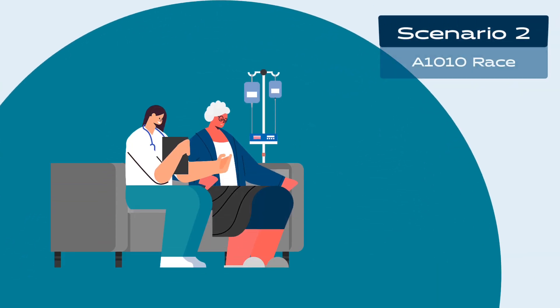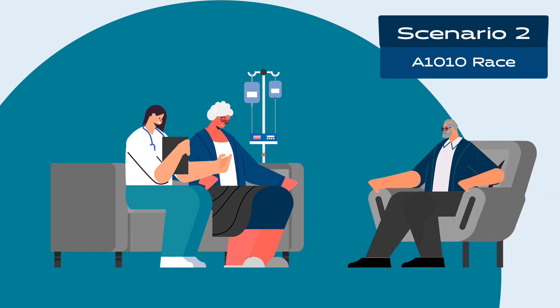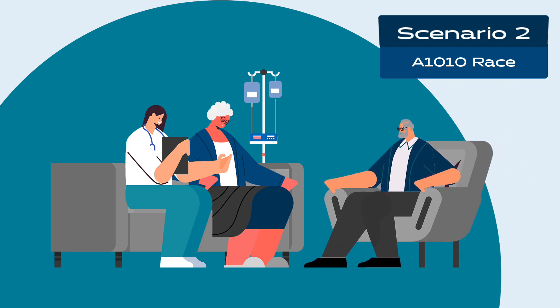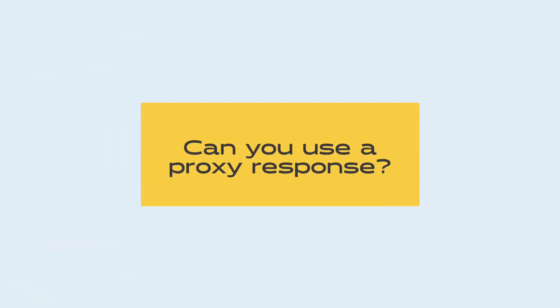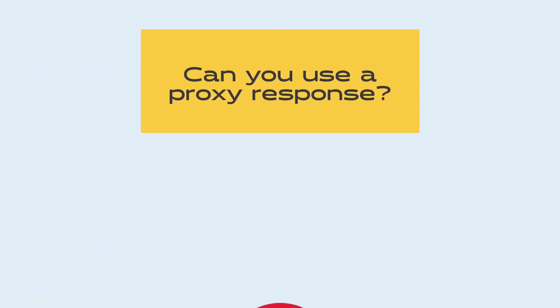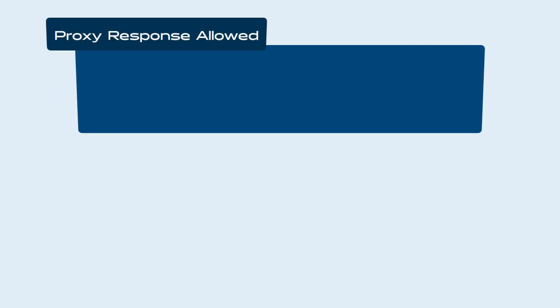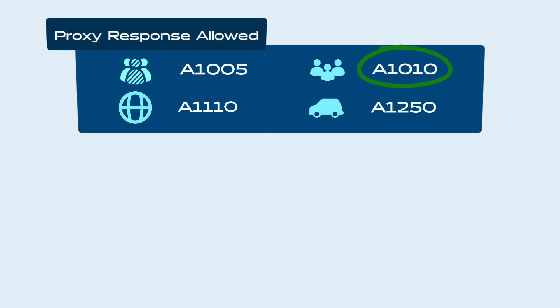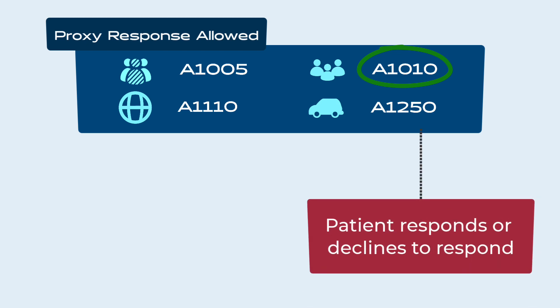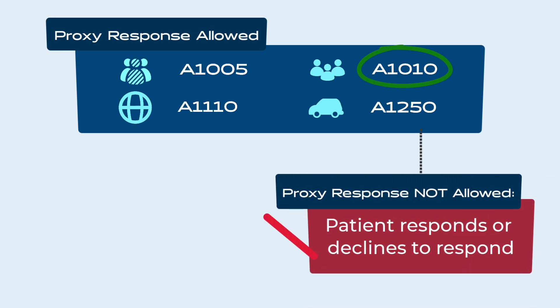When asked about A1010 race, your patient chooses not to respond. Their spouse, identified as their proxy, reports the patient's race is white. Can you use this proxy response? No. Although a proxy response can be used for A1010 race, because the patient declines to provide a response, proxy input cannot be considered.